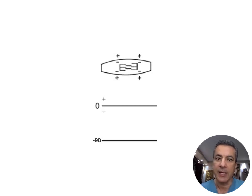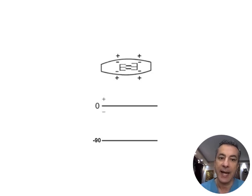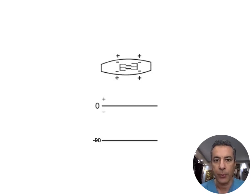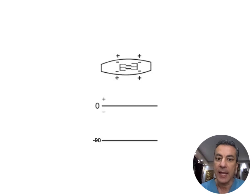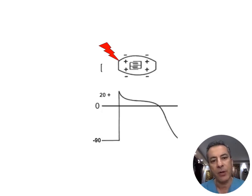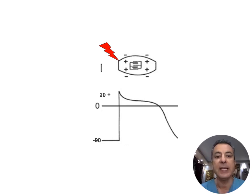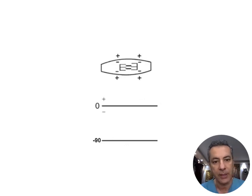Let's begin by examining a myocardial cell at rest. In this state, the cell is entirely relaxed and completely polarized, with the inner part relatively negative compared to the outer part. A potential difference of minus 90 millivolts can be recorded across the cell membrane. Upon arrival of a stimulus, the cell depolarizes and even reverses polarity, resulting in a recording of positive 20 millivolts in its inner part relative to the outer part.